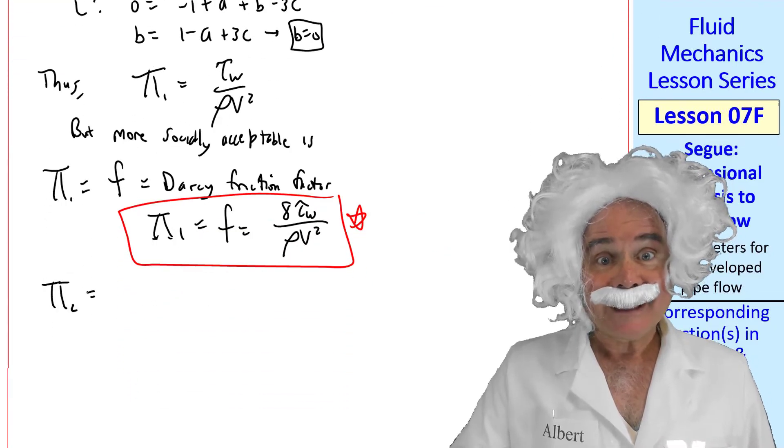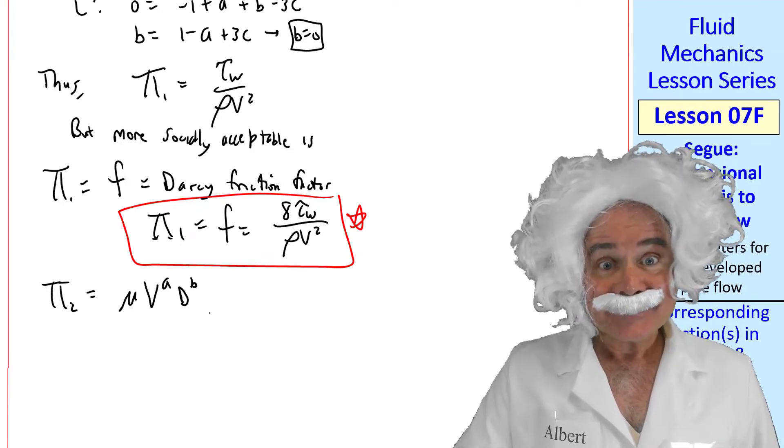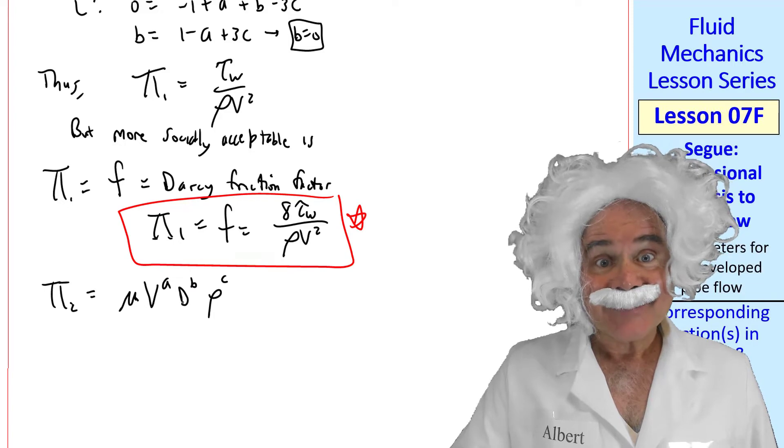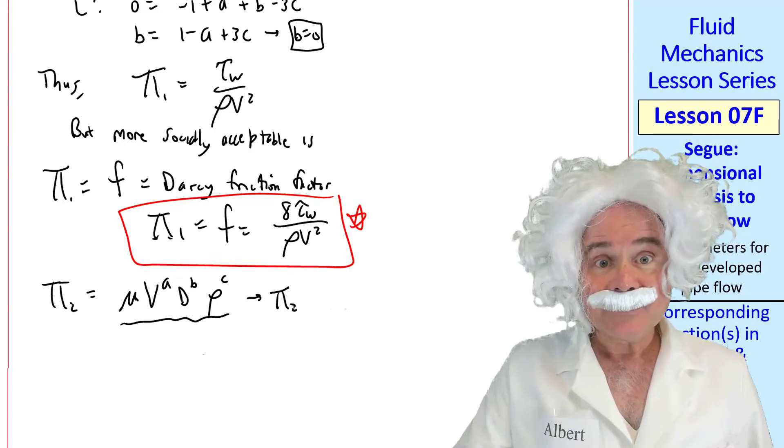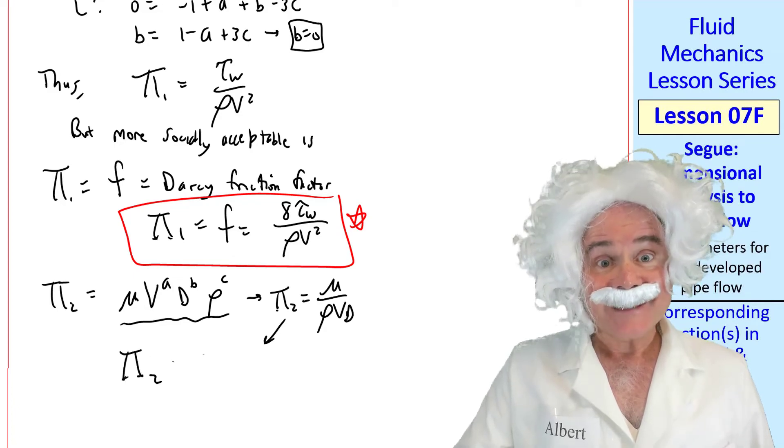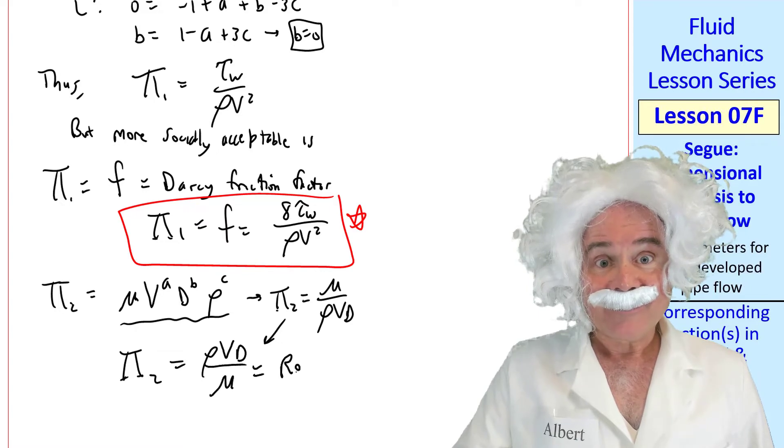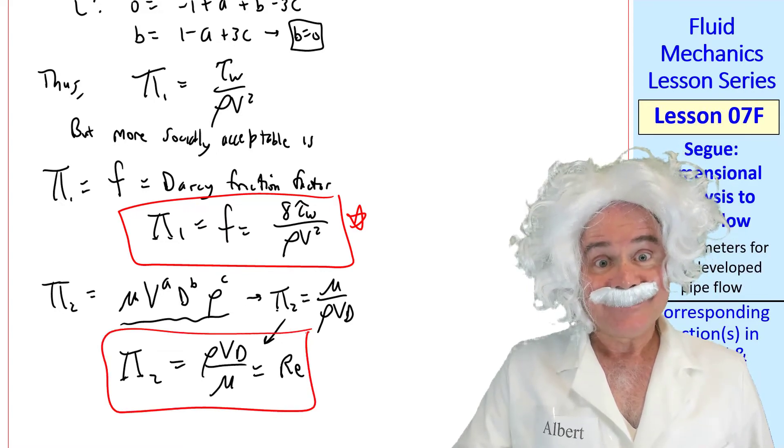Now pi two. We pick mu on the three repeating variables, raised to exponents. This one is the same as a previous example. We get pi equal mu over rho vd. But if we inverse it, we get Reynolds number, which is more acceptable. So, pi two equals rho vd over mu, which is Reynolds number.